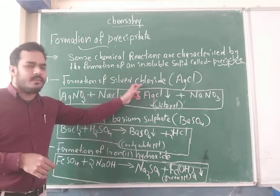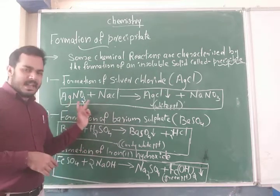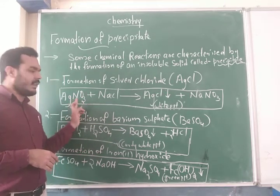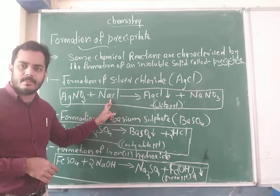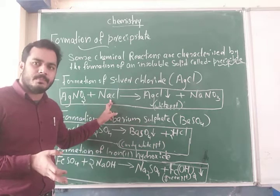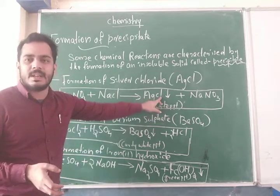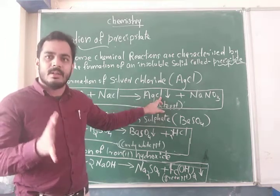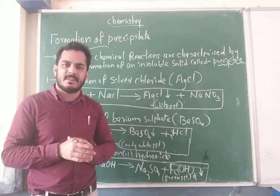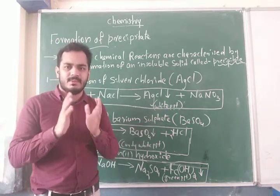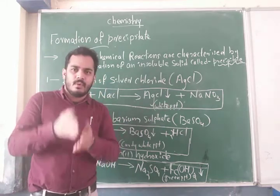The first one: formation of silver chloride, AgCl. The reactants are silver nitrate and sodium chloride. These react to form silver chloride precipitate. What is the color of the silver chloride precipitate? It is a white precipitate. Here we show a downward arrow symbol indicating the precipitate.